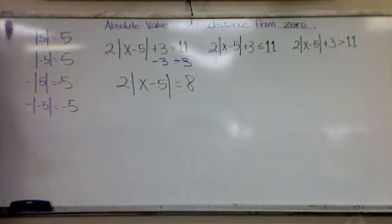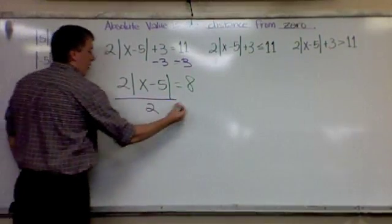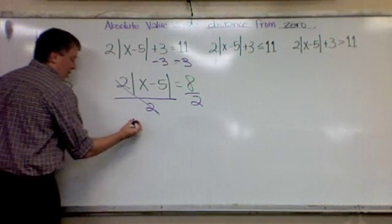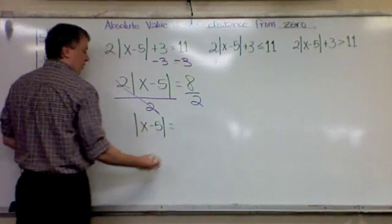What are you going to do now to get it by itself? Divide by two. This is two times, I'm going to divide by two. Gone. Absolute value of x minus 5 equals 4.